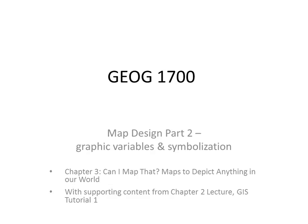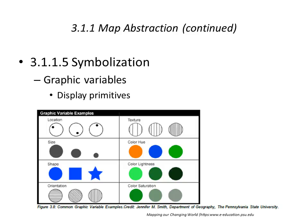In Part 2 of map design, we get into some of the details of graphic variables and symbolization. You'll get to see examples that illustrate the principles at play in this section of the course. We left off at the last file looking at a diagram which has to do with symbolization and display primitives that we use in applying graphic design principles to mapping. We'll see examples in the coming slides of the various ways in which we use these primitives as we make maps.